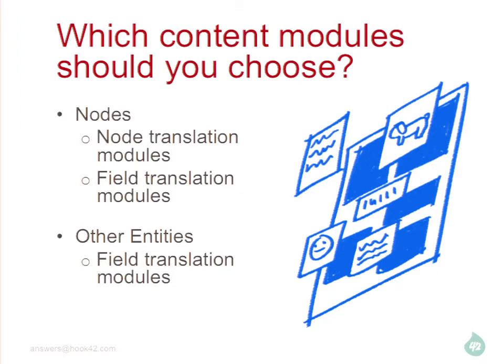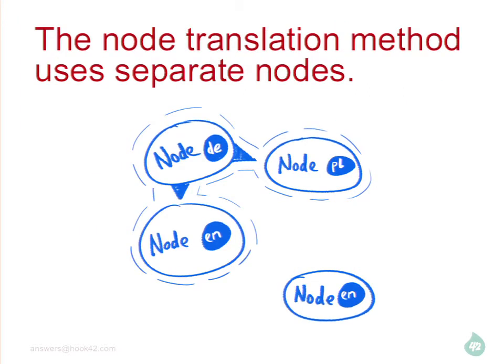The first method is called node translation or content translation — this is the way it was done in Drupal 6 and before, going back to Drupal 4. It's core translation — you don't need any extra modules. You have a source node, you decide to translate it, and it makes copies. So if I have a German source node, I translate it — I've got a Polish one and an English one. If you want to translate something, you end up making a copy of it.